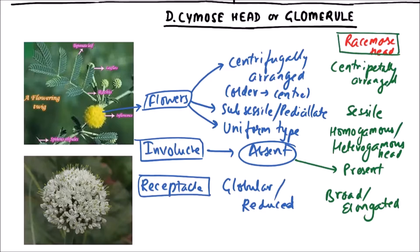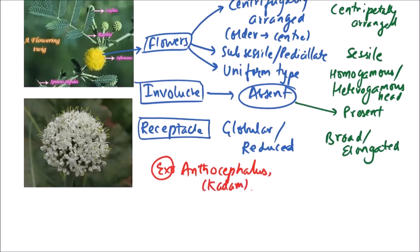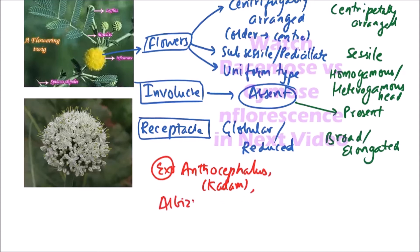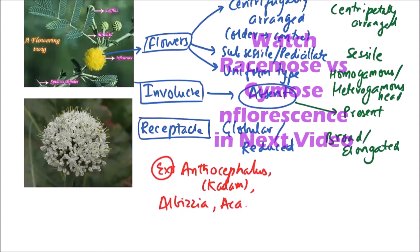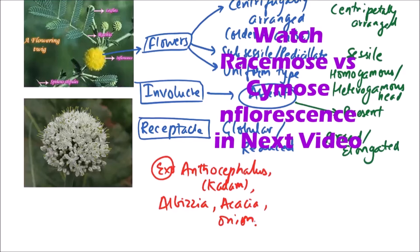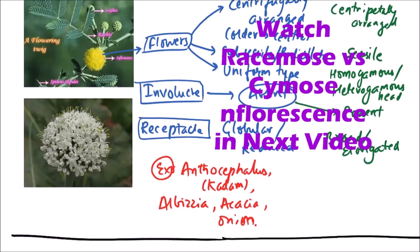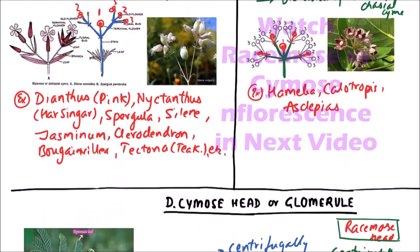So this is the comparison between a racemose head and a cymose head. The examples of cymose head include Anthocephalus, that is kadam; Albizia; Acacia; and onion. So these were the various types of cymose inflorescence. Thanks for watching this video.